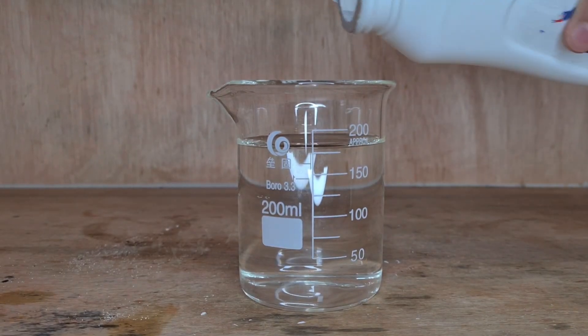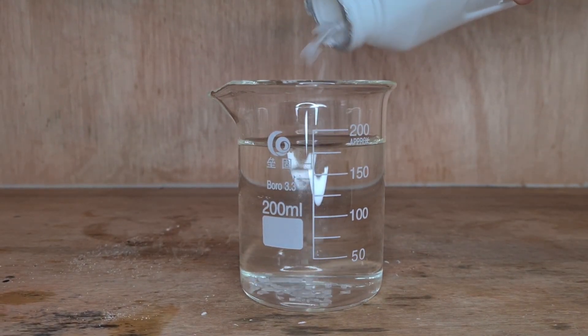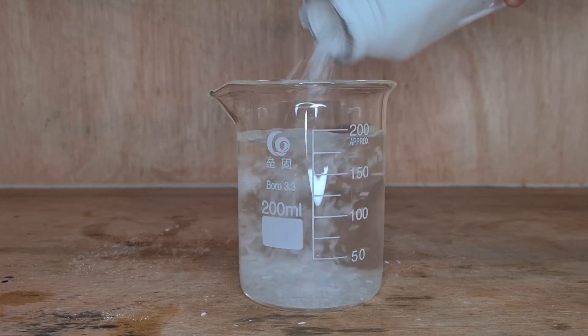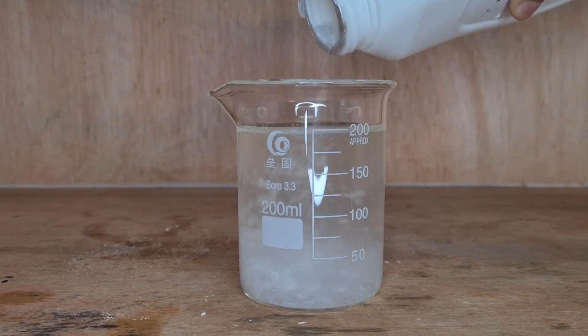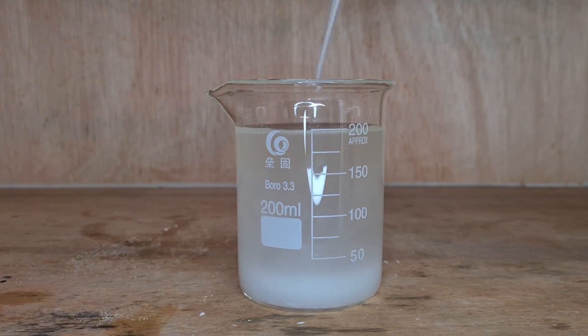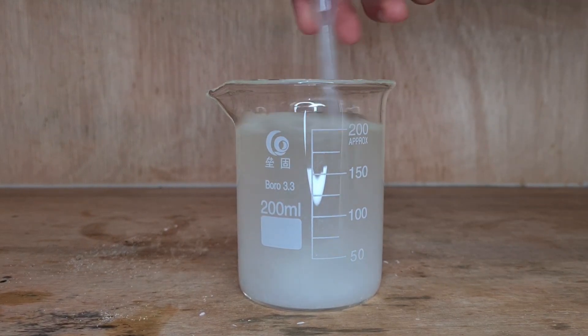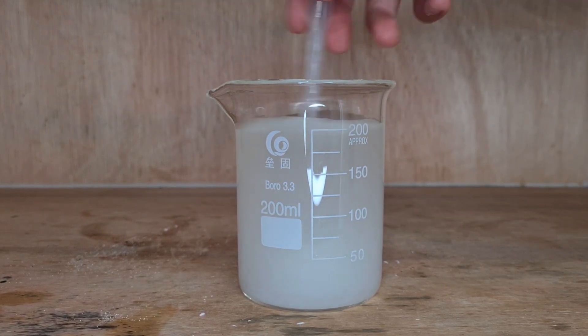So to about 175 milliliters of water, I'm going to add 50 grams of sodium hydroxide. Now we're going to mix everything until all the sodium hydroxide dissolves.